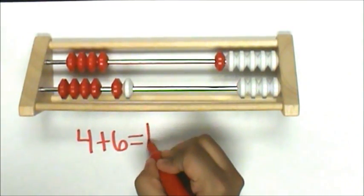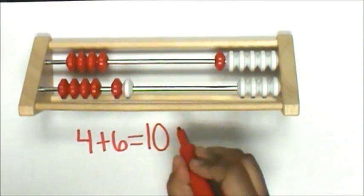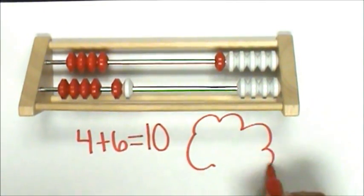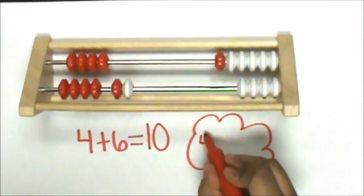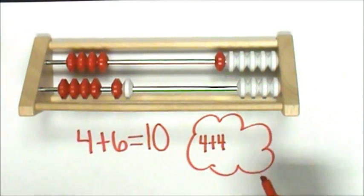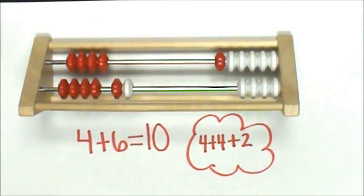So I know that 4 and 6 is 10 because, and here's my thinking, 4 plus 4 is 8 plus 2 is 10. 5 and 6 is 11.